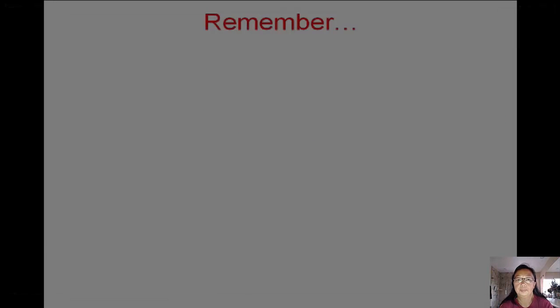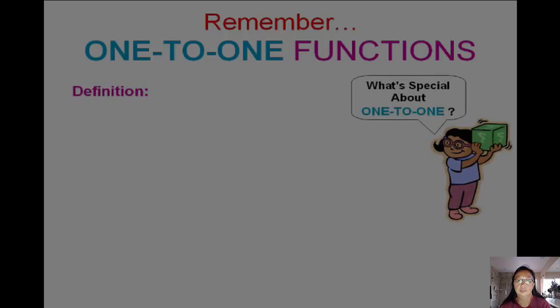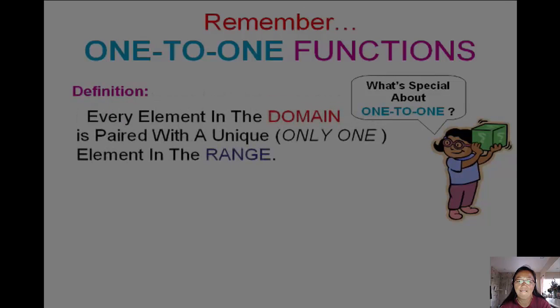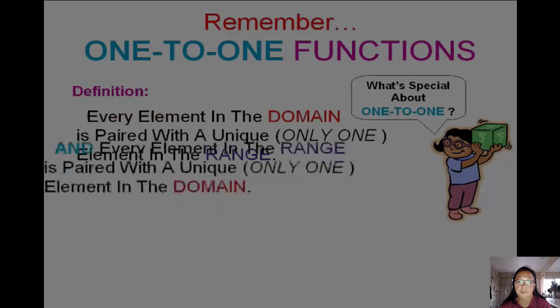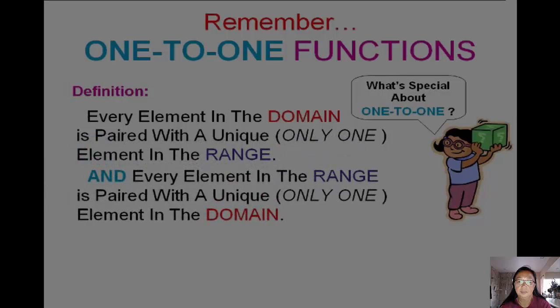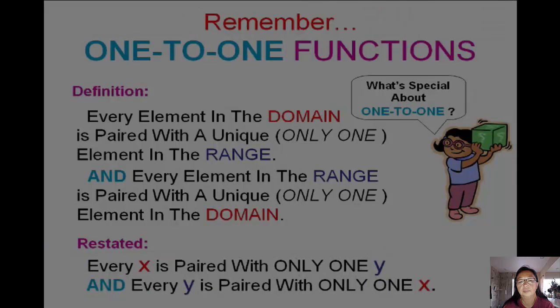Do you remember a special type of function called a one-to-one function? Well, what made it special? First of all, every element in the domain was paired with a unique element in the range. That's what made it a function. What makes it a one-to-one function is that it works the other way as well. It's a special type of function that every element in the range is paired with a unique element in the domain. In other words, it works backwards. Every x is paired with only one y, and every y is paired with only one x.